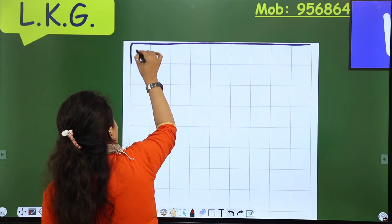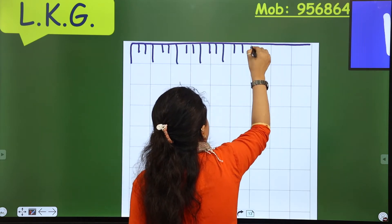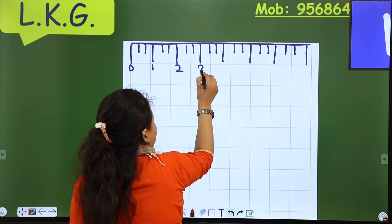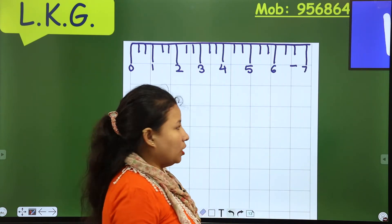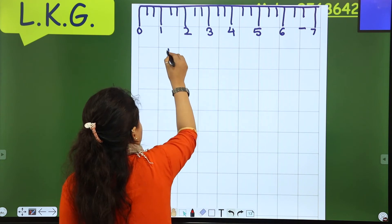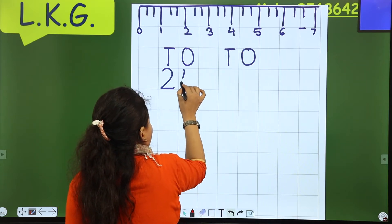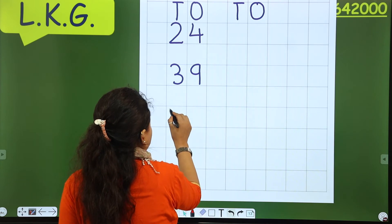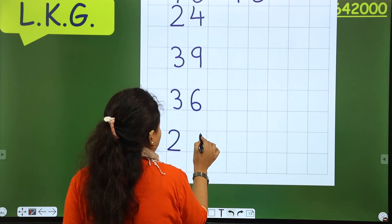Okay, now: zero, one, two, three, four, five, six, seven. Now I will write some numbers. Twenty-two. Thirty-nine. Next is thirty-six. Twenty-nine. Have you got it?